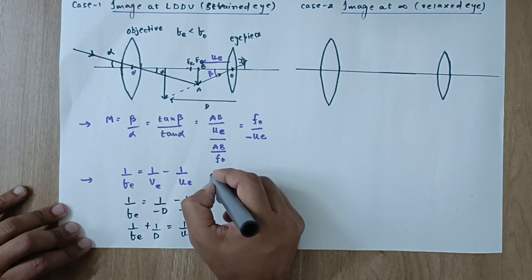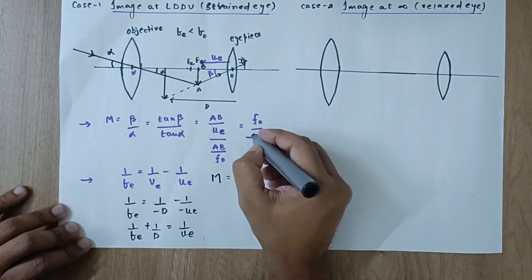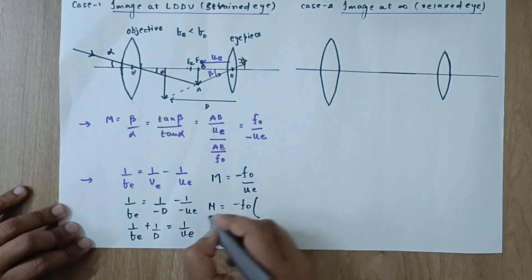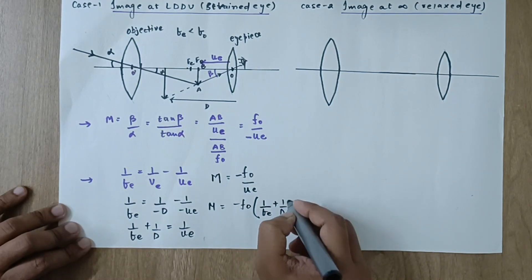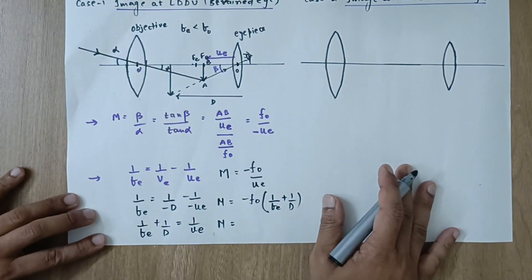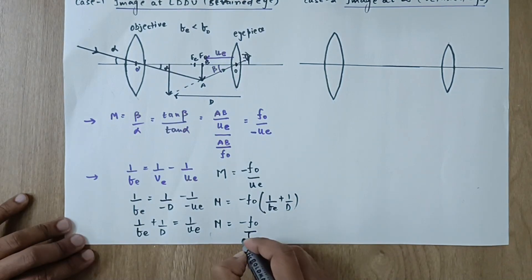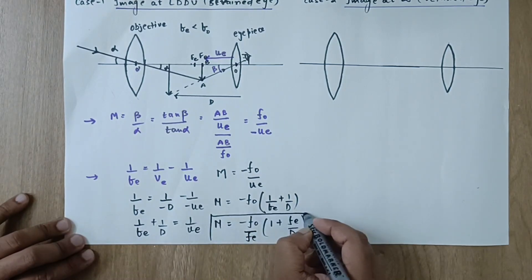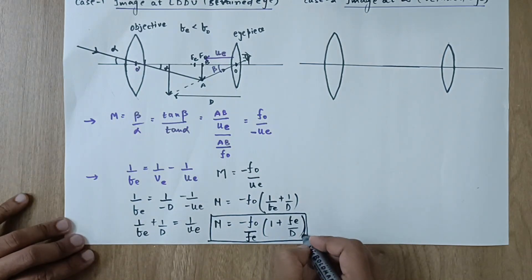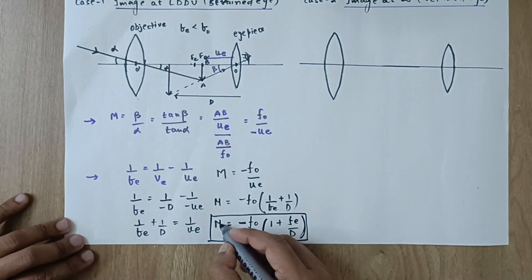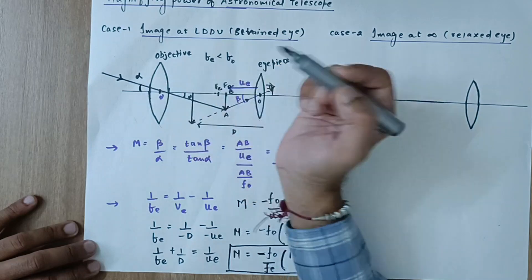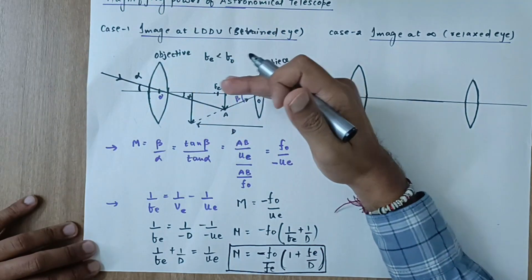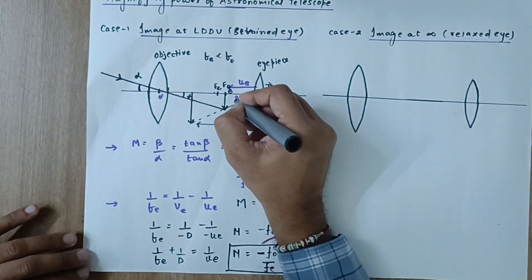Substituting 1/ue into the magnifying power expression: M = −fo × (1/ue) = −fo × (1/fe + 1/D). Rearranging: M = −(fo/fe)(1 + fe/D). This is the final formula for magnifying power in Case 1. The negative sign arises because angle beta is below the horizontal while alpha is above it, meaning the final image is inverted with respect to the object.